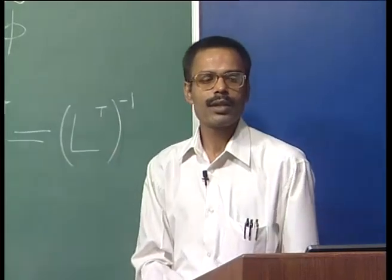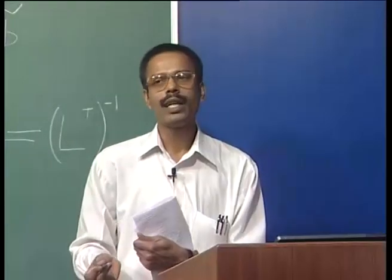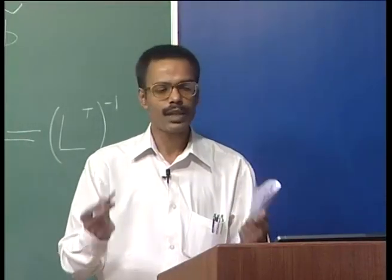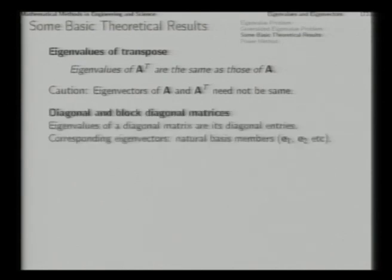Now we establish basic theoretical results. First: the eigenvalues of the transpose of a matrix are the same as those of the original matrix, because det(Aᵀ) = det(A), so the characteristic polynomial is unchanged. Eigenvectors of Aᵀ are generally different from those of A.